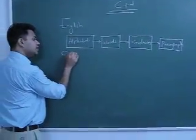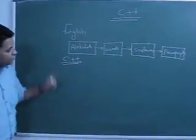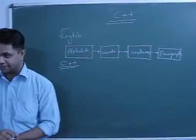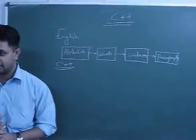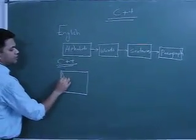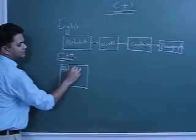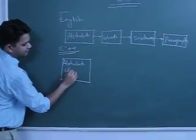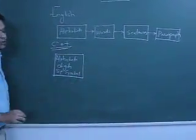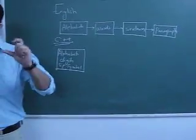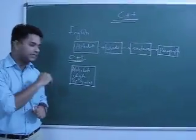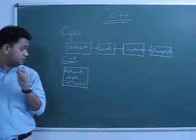Now we are going to learn C++. For C++, we also have to go through a certain type of journey. We cannot directly start with the program. We will start with the very basic: alphabets, digits, and special symbols. In C++, what do you mean by alphabets? What do you mean by digits? What do you mean by special symbols?